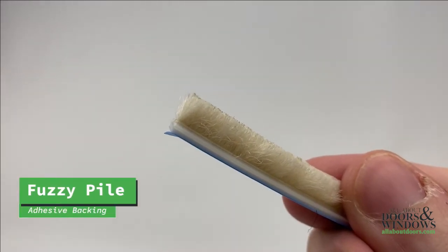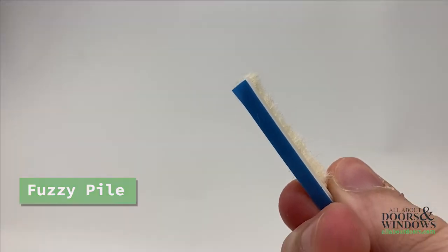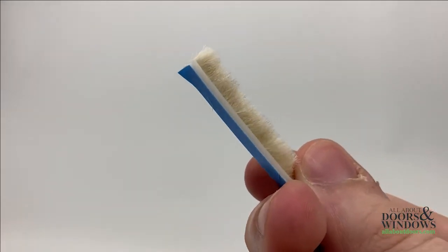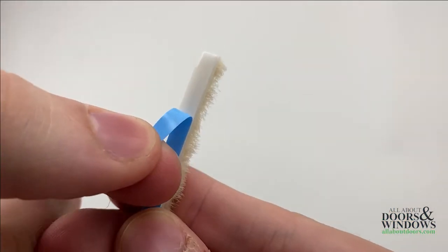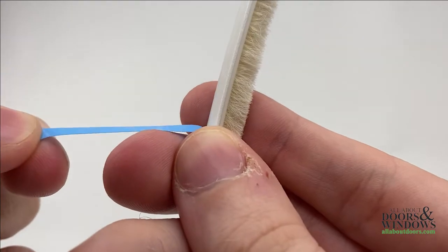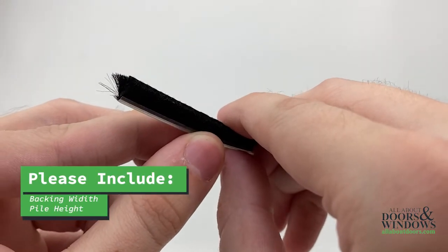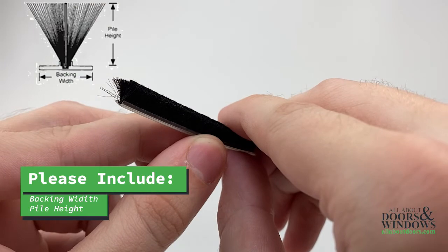Moving on to fuzzy pile weatherstripping. This weatherstrip is water-resistant and has an adhesive backing that can be exposed by peeling off the cover. Once the cover is removed, it works on storm doors and windows. When contacting us for replacement options, please include the backing width and the pile height.